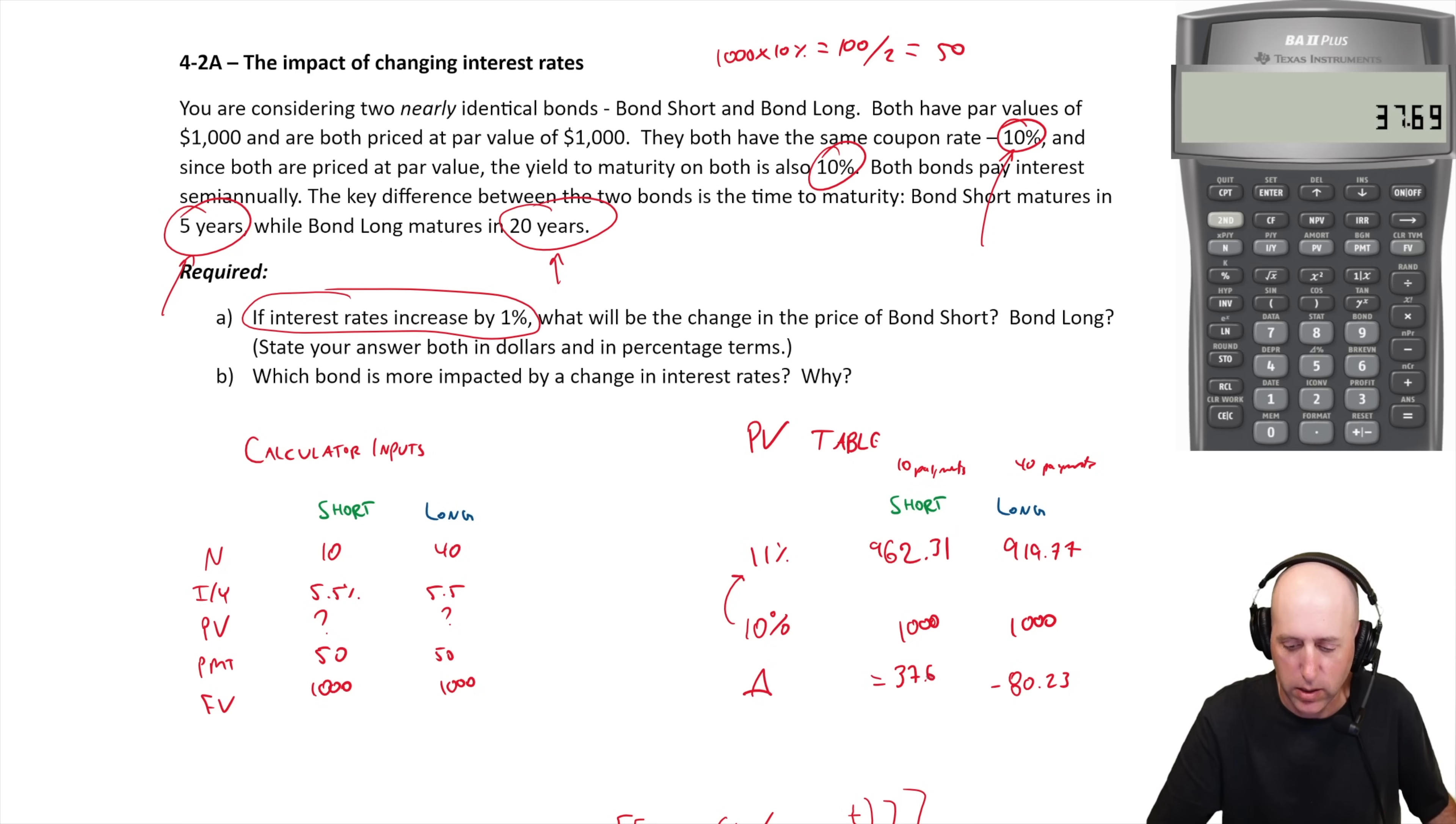In this case our price went down a thousand minus 962.31, our price went down by 37.69. You're answering both dollar and percentage change, so percentage change you divide the change by the earlier number, the thousand. 37.69 divided by a thousand is 0.03769, which is 3.769%. This one went down by 8.023%.